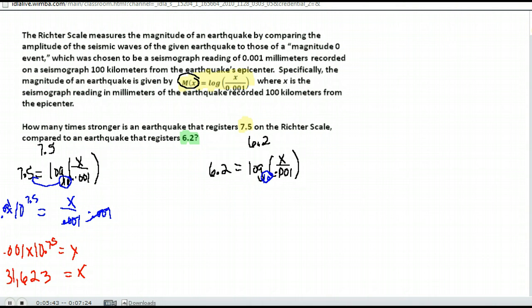This is log base 10 if it's not given. So we have base 10 to the 6.2 power is equal to x over .001. We just rewrote that in exponential form. We're going to solve this equation for x. So if I multiply both sides by .001, that will clear my denominator and I will have solved for x. All I have to do is calculate that.